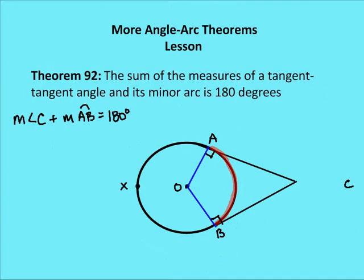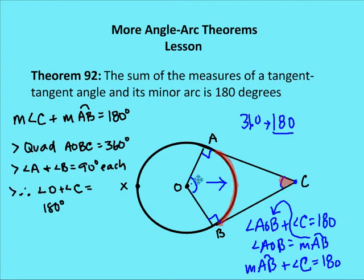One more: the sum of the measures of a tangent-tangent angle and its minor arc is 180 degrees. We solve that by determining that quadrilateral AOBC has 360 degrees for all interior angles. Angles OAC and OBC are both right angles because the radius to a tangent makes a right angle. Subtracting 180 from 360, angle AOB and angle C add up to 180 degrees, and the central angle AOB equals the intercepted arc AB.